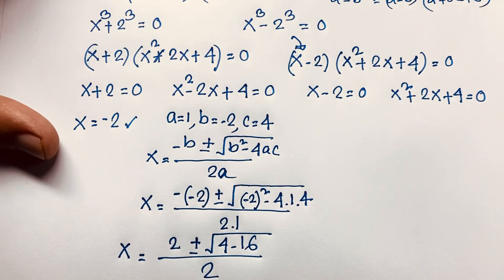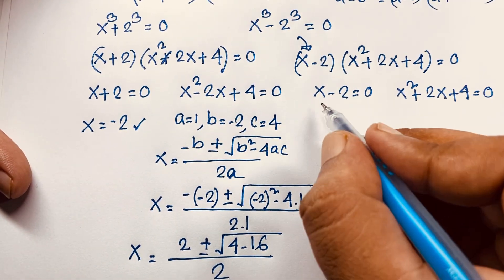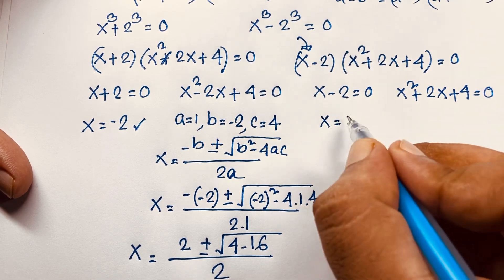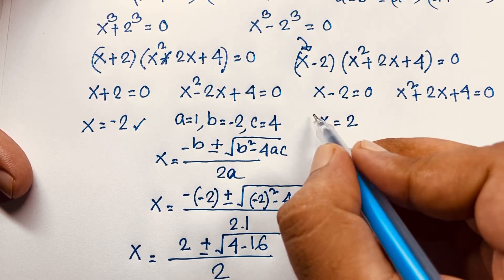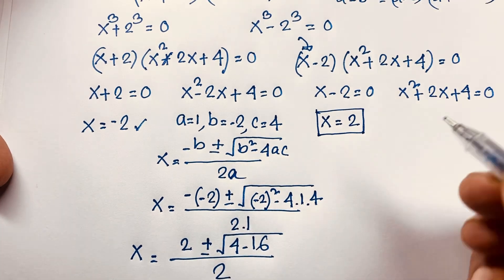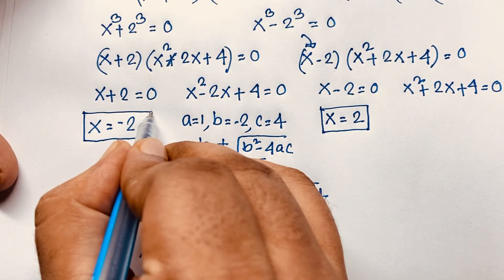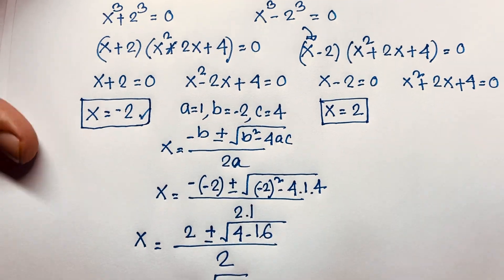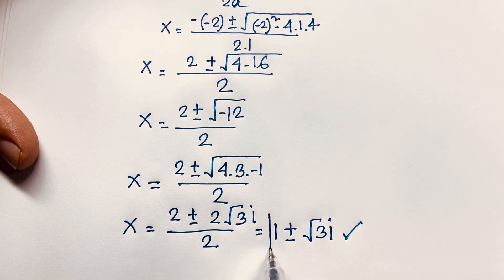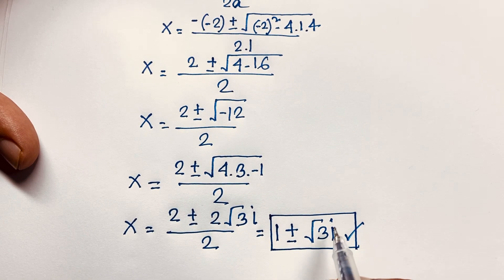For the other case, x − 2 = 0, moving the 2 to the positive side gives x = 2. So our real solutions are x = 2 and x = −2. We will also find two more complex solutions from the remaining quadratic, giving 1 ± √3·i.